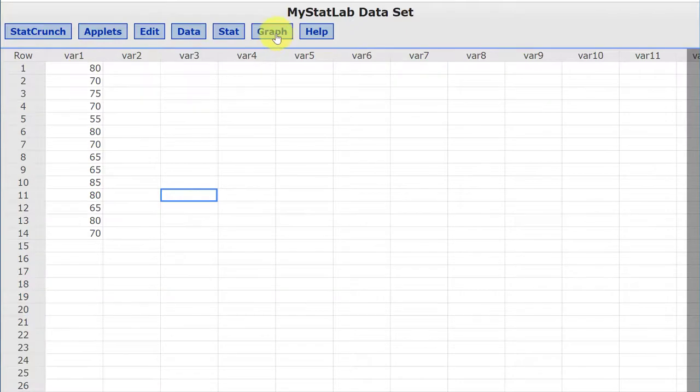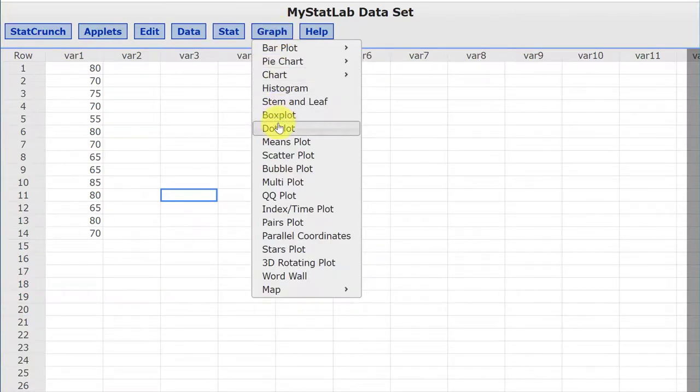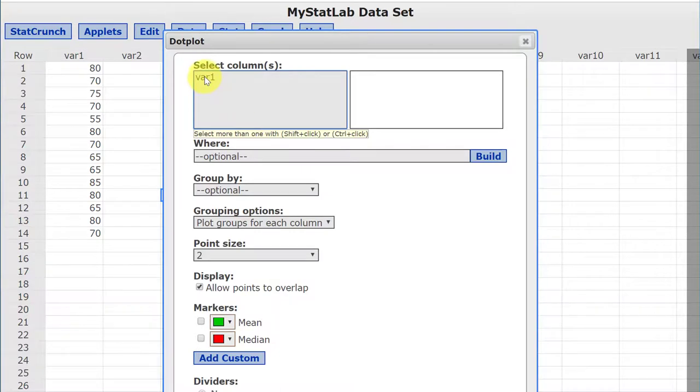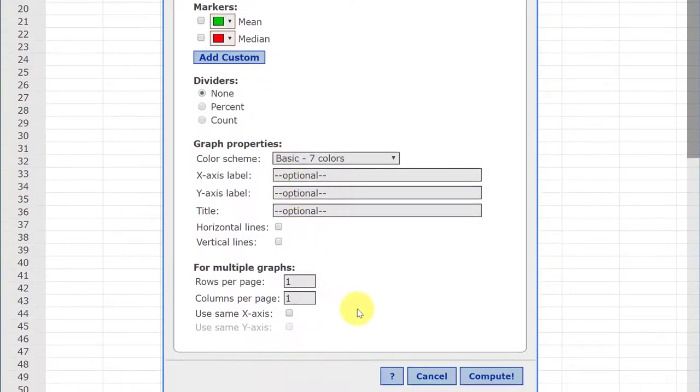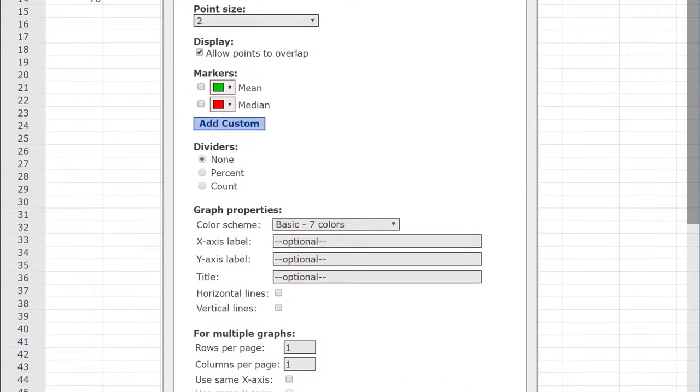We're going to go to graph. Look down until we see dot plot. We need to select the column with our data. Just double click it and make sure it shows up over here. And then we're going to leave everything else just the way it offers and click compute.